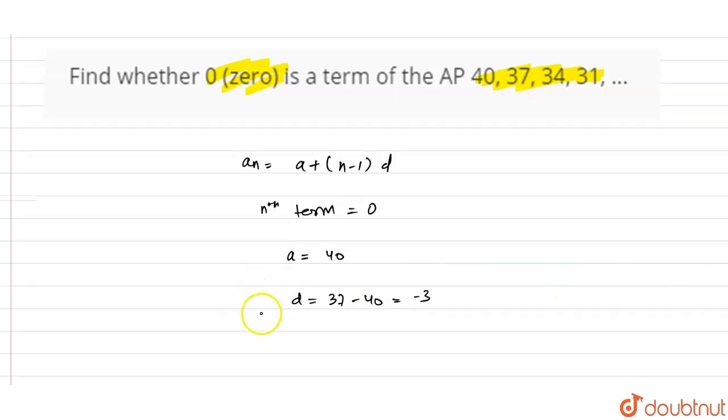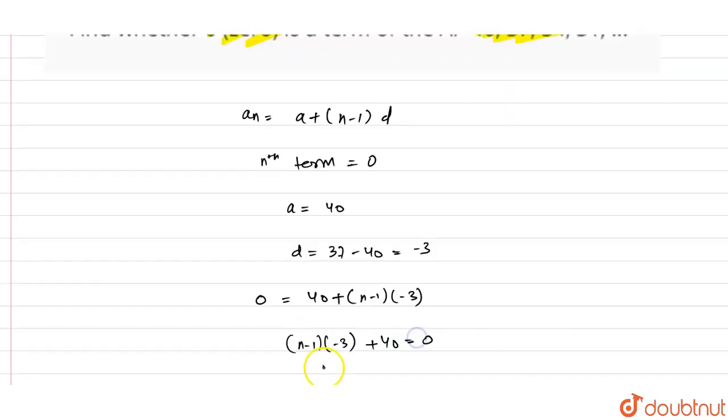So put these values in our equation. So 0 equals 40 plus n minus 1 into minus 3. So n minus 1 equals 40 by 3.